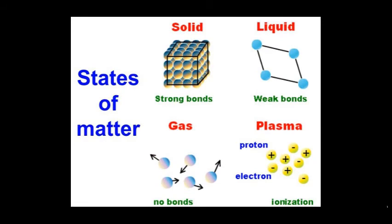Matter comes in four different forms. We call those forms states of matter, and they are solid, liquid, gas, and plasma.